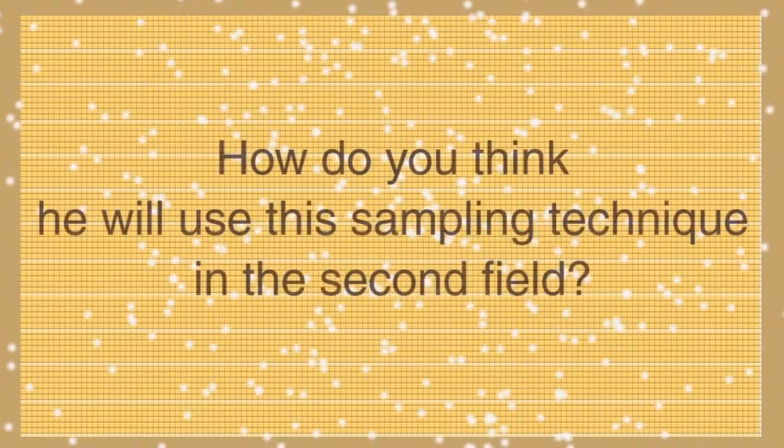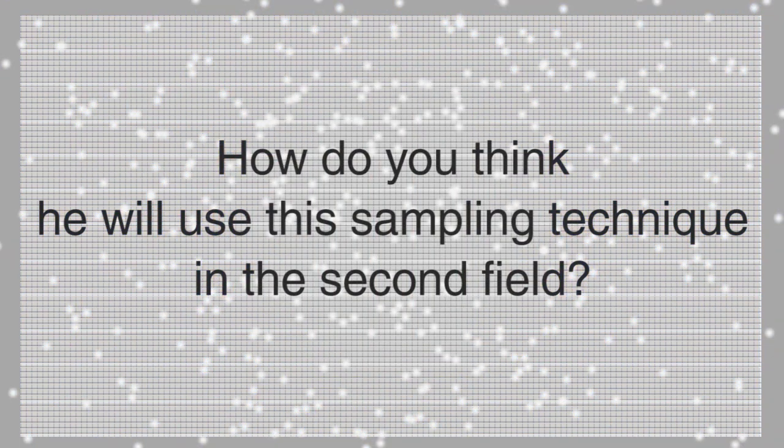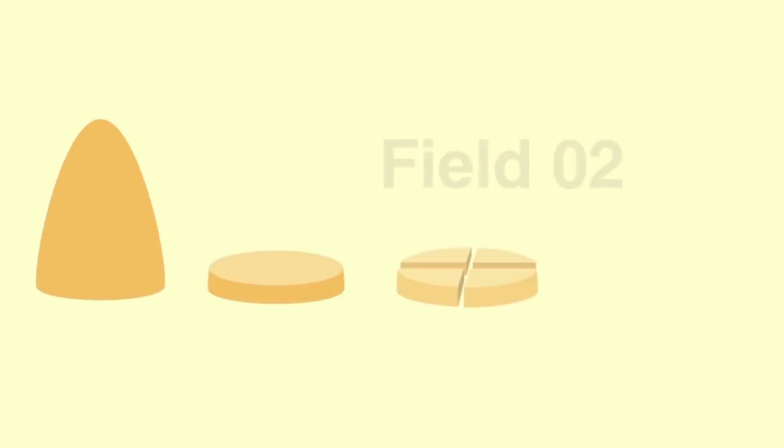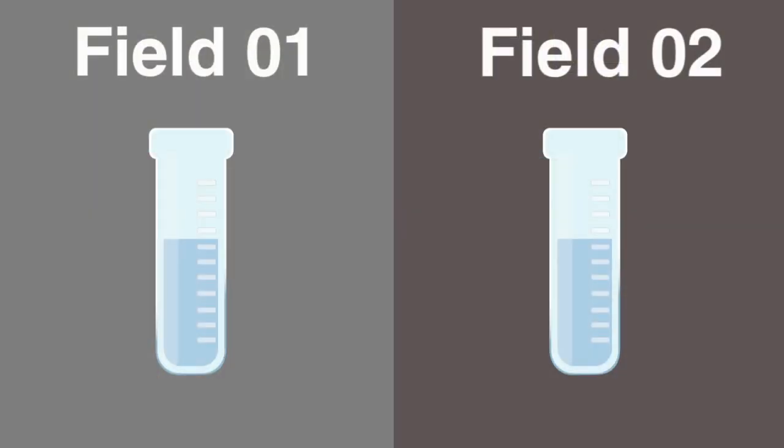How do you think you will use this sampling technique in the second field? Pause the video and think about this. Resume when ready. The answer is that the process would be repeated in the second field and the two fields compared. Comparison of laboratory samples from the two fields will tell the farmer if there is a discrepancy in the fertilizer mix between the two fields.